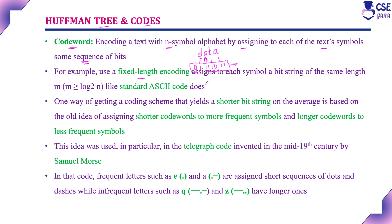We can use fixed-length encoding, which means assigning each symbol a bit string of the same length. For example, if we consider 'data', D is 01 and A is 11. Likewise, for each character we have assigned a two-bit code, like standard ASCII code. So if you are assigning each character the same bit length, that is called fixed-length encoding.